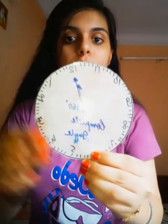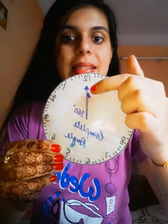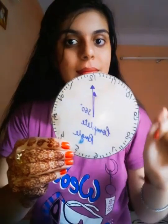Our sixth angle is the complete angle. Complete angle means 360 degrees — the measure of the angle is 360 degrees. Here is the clock showing a complete angle as it has completed the whole turn. So these are the types of angles.